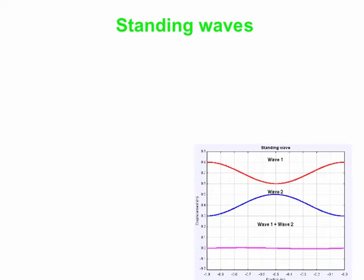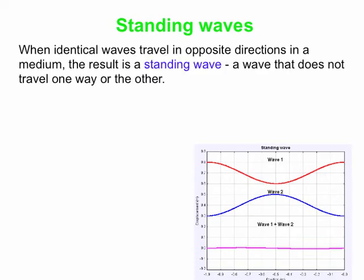So let's talk about standing waves. You can produce a standing wave by sending identical waves along a string, or through a medium, in opposite directions. And the result is a wave that doesn't move left or right. So you've got one wave going left, one wave going right — they're identical — and together they form what's called a standing wave.